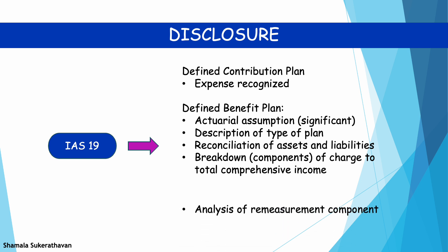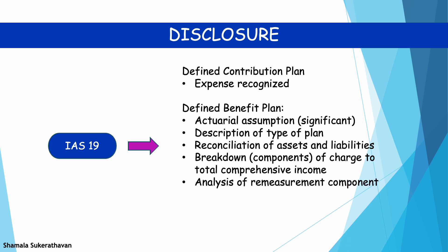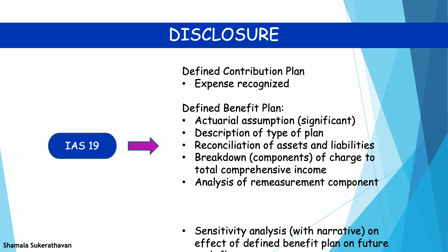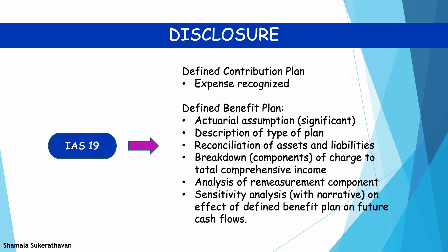Four: breakdown into appropriate components of the charge to total comprehensive income. Five: analysis of the remeasurement component, identifying returns on plan assets as well as actuarial gains or losses recognised. Six: sensitivity analysis with narrative description on how the defined benefit plan may affect the nature, timing, and uncertainty of the entity's future cash flows.